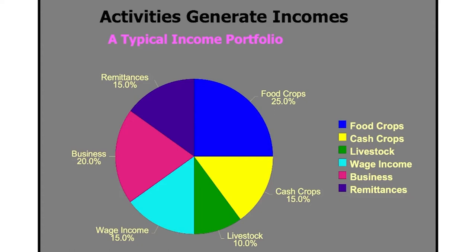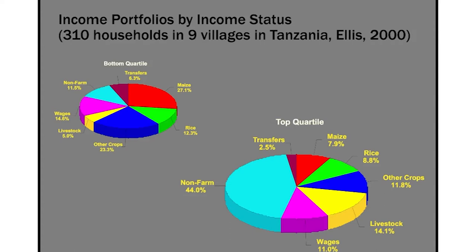In a study of 310 households in 9 villages in Tanzania, Ellis found quite a significant difference between the top quartile and the bottom quartile. In the top 25%, 44% of their income comes from non-farm income — they might have set up a petrol pump, a shop, a restaurant. Whereas for the bottom 25%, only 11% of their income comes from non-farm sources, and 27% — the basic staple maize — contributes a substantial chunk of their income portfolio.